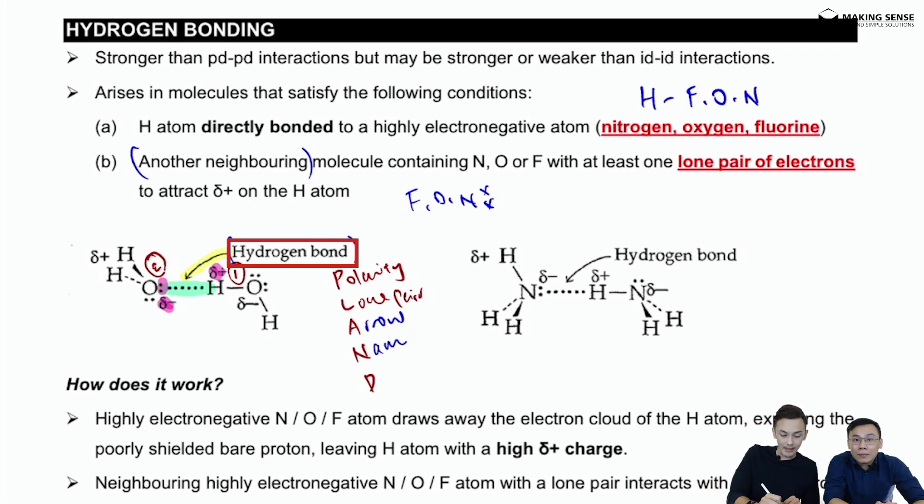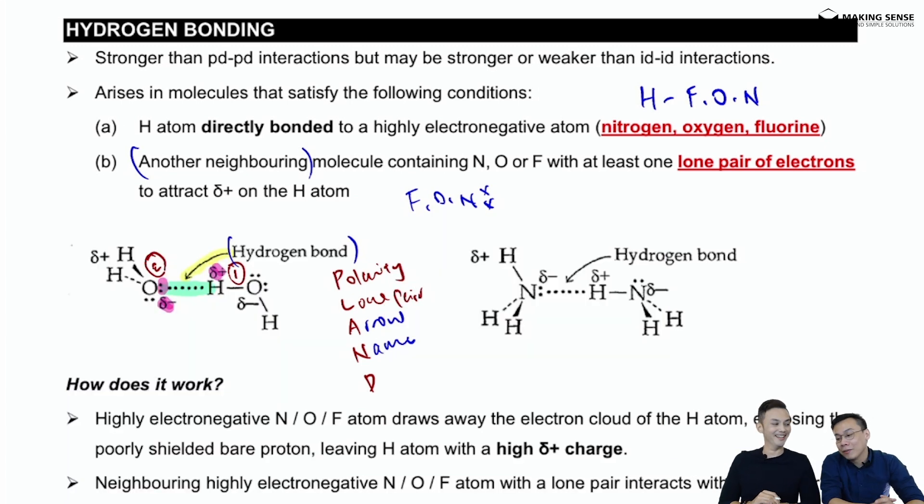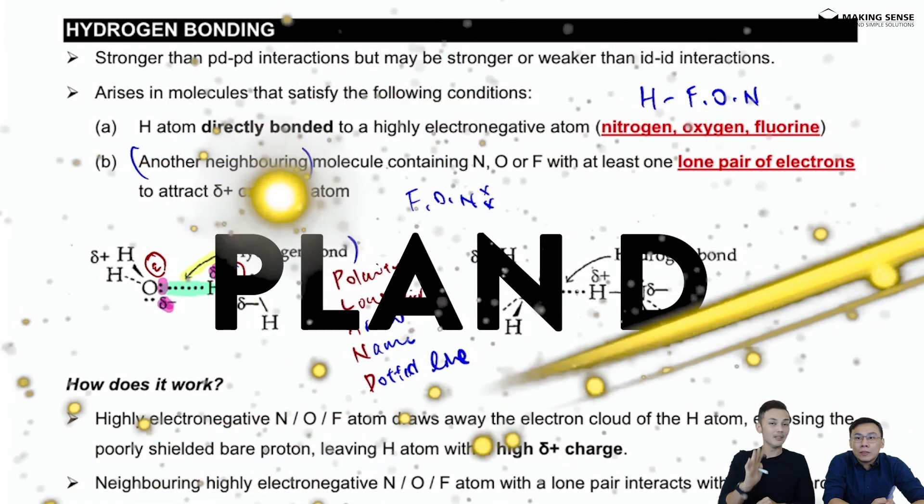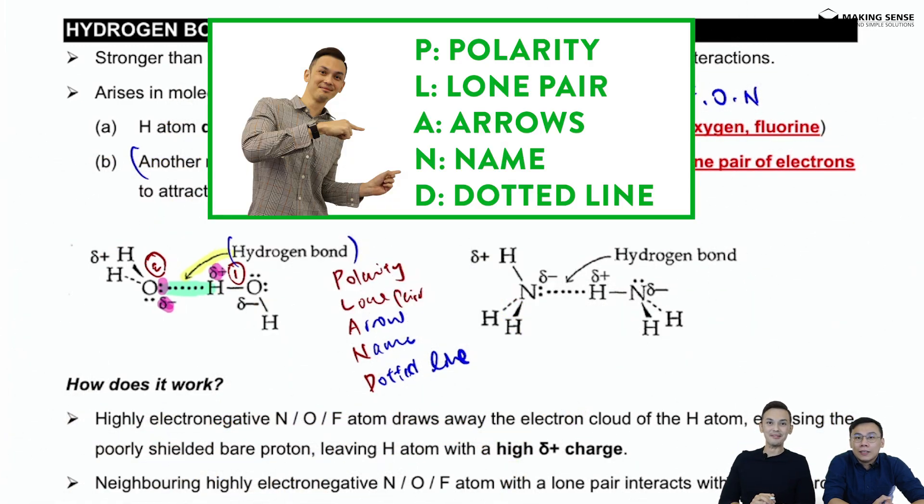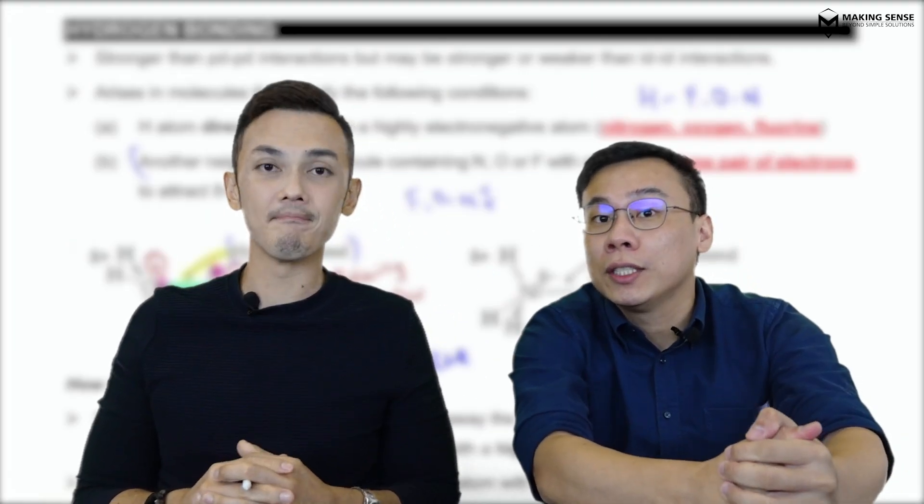The last thing is D. D for dog? D must be this green color thing you highlighted—it's a dotted line. It stands for the dotted line. These are generally the marking criteria, what examiners are looking for when you're drawing hydrogen bonding. Just remember plan D. When all things fail, plan D will work for hydrogen bond. Thanks for the quick recap of the three intermolecular forces of attraction.